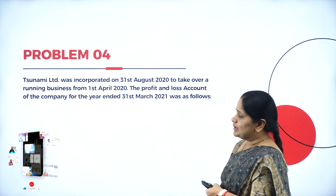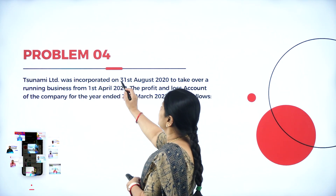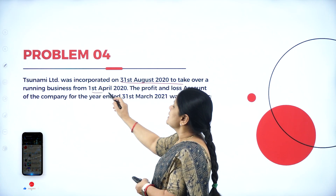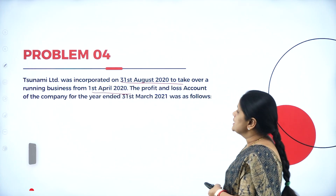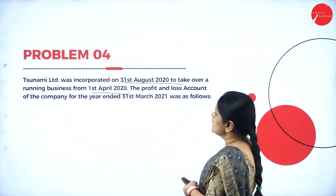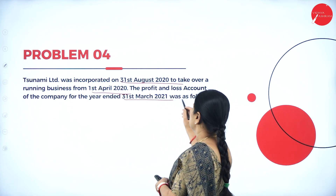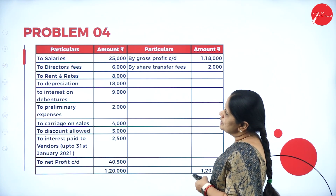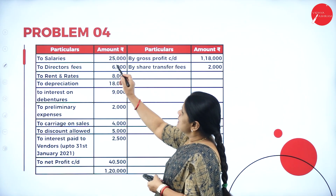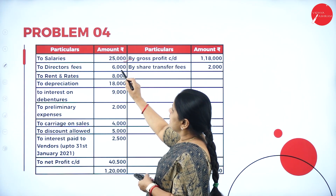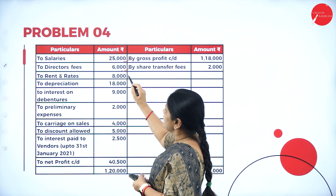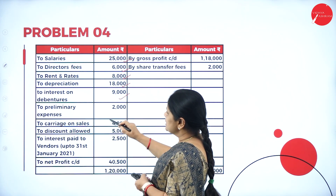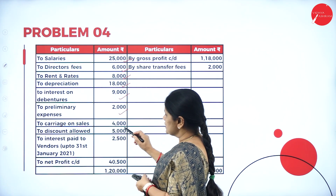Let us look into this problem. Tsunami Limited was incorporated on 31st August 2020 to take over a running business from 1st April 2020. The profit and loss account of the company for the year ended 31st March 2021 shows: salaries 25,000, director's fees 6,000, rent and rates 8,000, depreciation 18,000, interest on debentures 9,000, preliminary expenses 2,000.